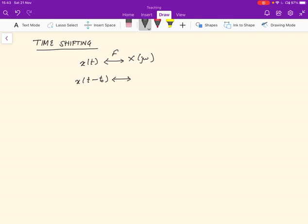then its Fourier transform is given by e to the minus j omega t naught X j omega. So in other words, shifting the signal by t zero units over here is the same as multiplying it by e to the minus j omega t naught in the frequency domain.